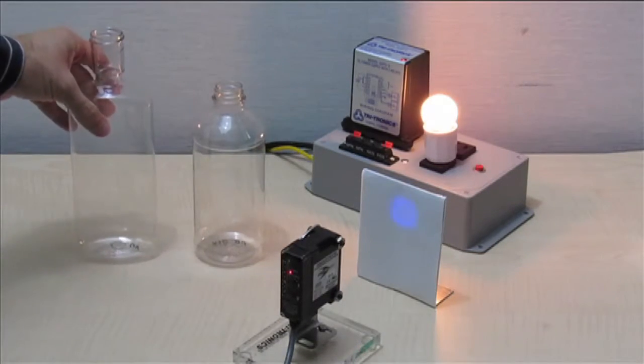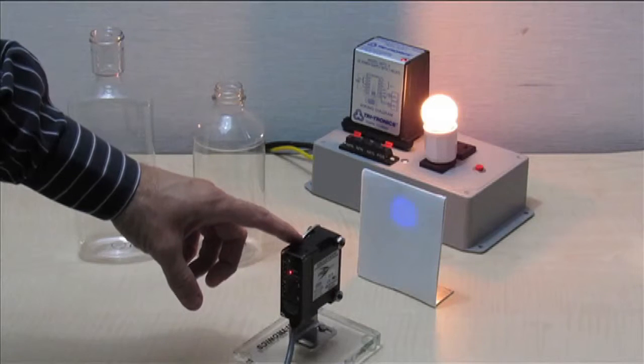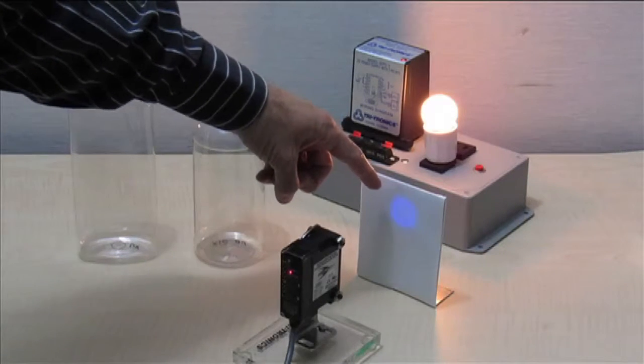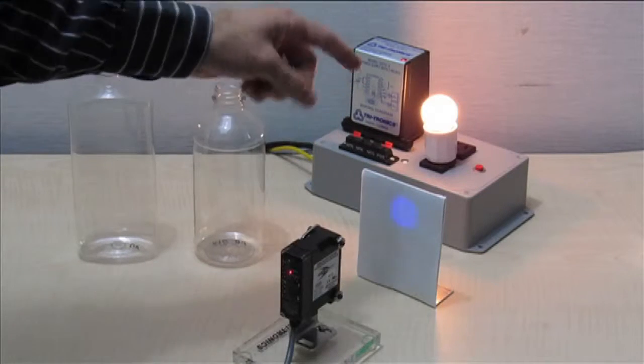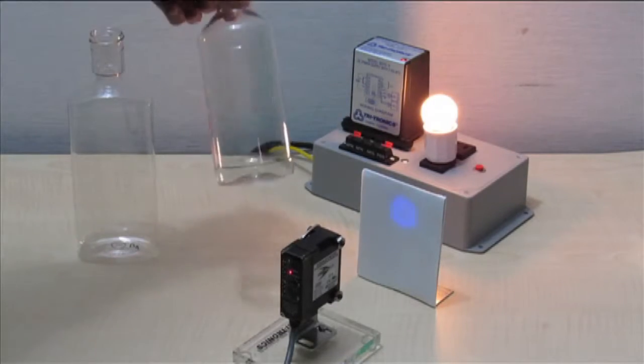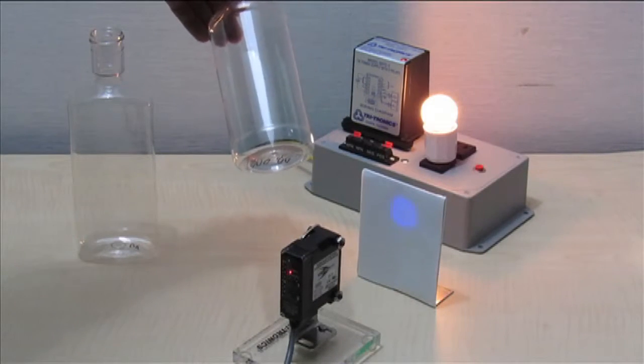We've done that using our SmartEye Stealth UV sensor. We've set the sensor up to see this UV fluorescent target across the conveyor, and when the bottle with no UV inhibiting coating